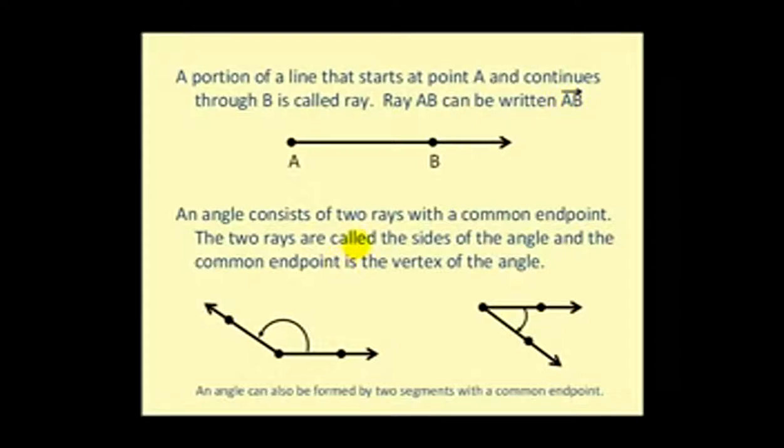An angle consists of two rays with a common endpoint. The two rays are called the sides of the angle and the common endpoint is called the vertex. So here we have the vertex, here we have one side, here we have another side.